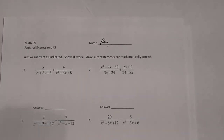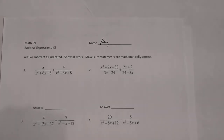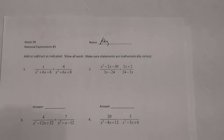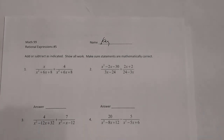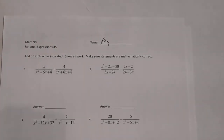This is the key to rational expressions number five. Let's go ahead and look at number one. There are four problems here, and you want to add or subtract as indicated.